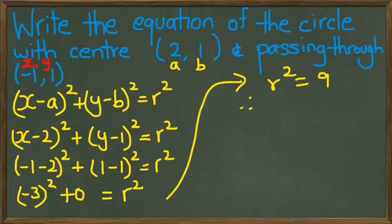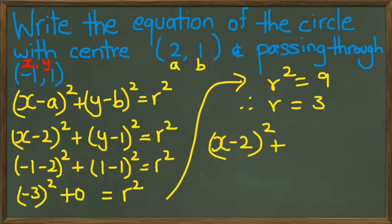And the equation for this particular circle will be (x - 2)² + (y - 1)² = 9.